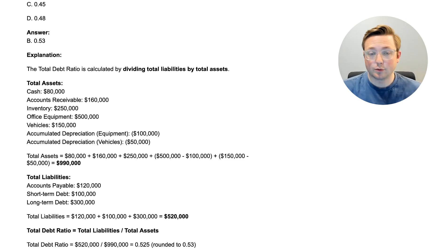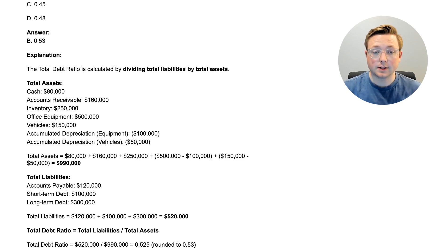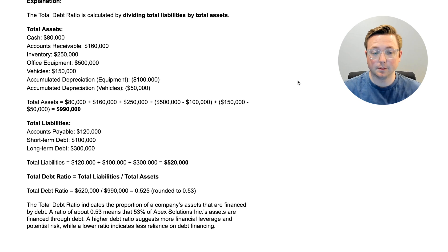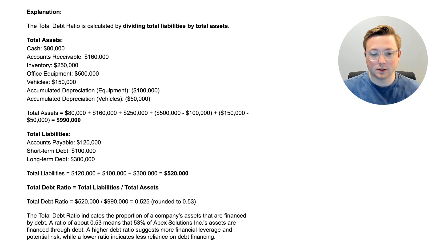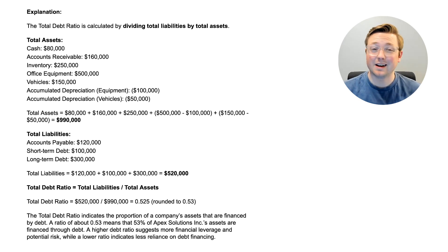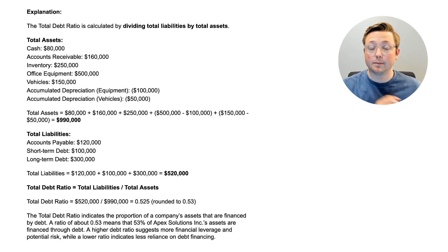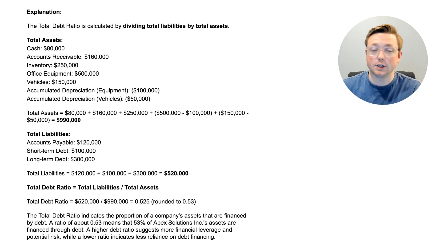The answer is B — 0.53 is the total debt ratio. The total debt ratio is very simple: you take the total liabilities and divide them by total assets. So instead of dividing by total equity as in the debt-to-equity ratio, you divide by total assets. That's the total debt ratio — very straightforward once you know what it is.